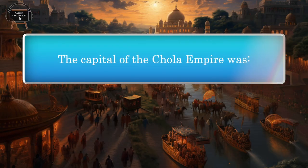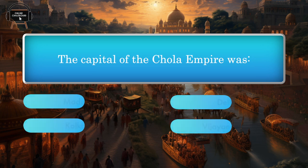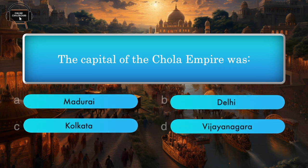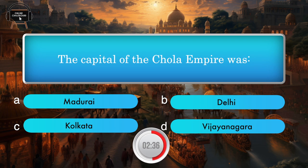The capital of the Chola Empire was — Madurai, Kolkata, Vijayanagara. Answer: Madurai.